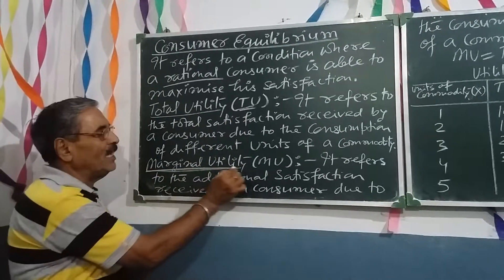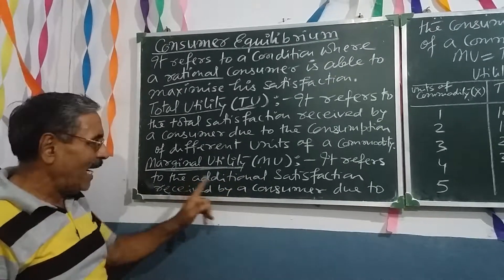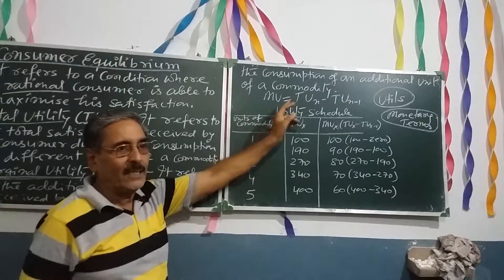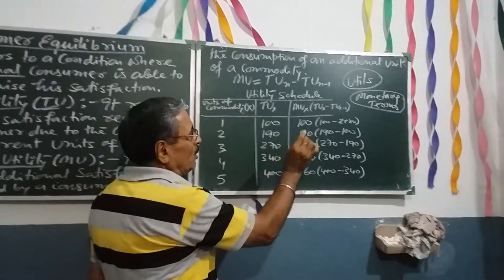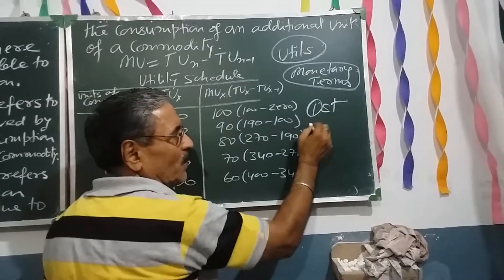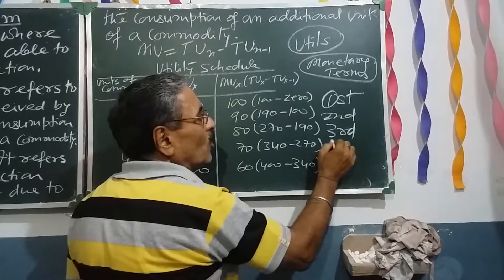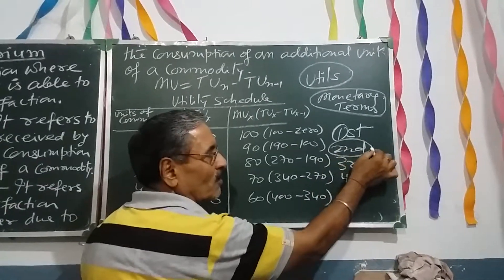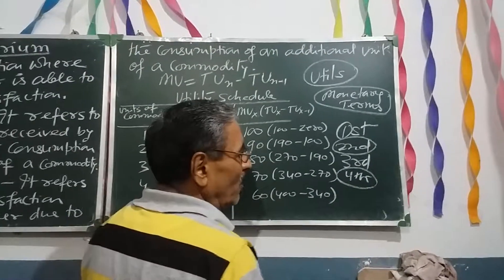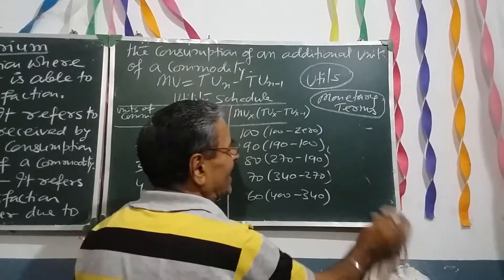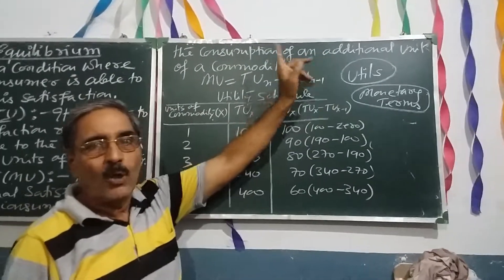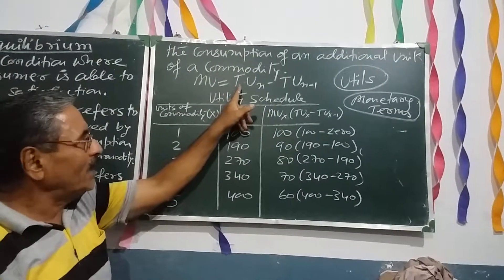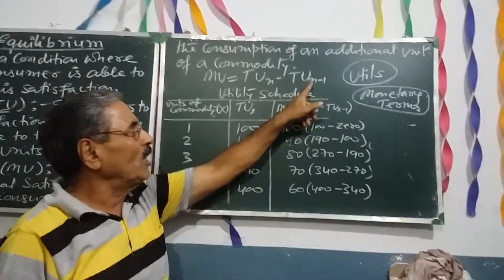The second term is Marginal Utility, symbolically MU. It refers to the additional satisfaction received by a consumer due to the consumption of an additional unit of a commodity. If a consumer is consuming mangoes — first, second, third, fourth, and so on — we are interested to know how much satisfaction he got from the second one, or from the fourth one individually. Marginal utility can be derived using the formula: MU = TU of n minus TU of n minus one.